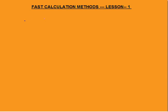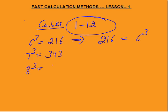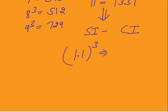The next topic is cubes from 1 to 12. You must know cubes up to 5 already. 6 cubed is 216 — whenever 216 appears, it means 6 cubed. 7 cubed is 343. 8 cubed is 512. 9 cubed is 729. 11 cubed is 1331, which is very important — particularly because in simple interest and compound interest questions you need to calculate 1.1 cubed, which is just 11 cubed = 1.331.